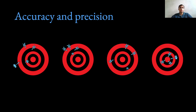The first dart board is an example of a test which is least accurate and least precise among the four. The second is an example of a highly precise test, but not a very accurate test. The third dart board is an example of an accurate test, but not precise. And the fourth is an example of an accurate as well as a precise test.